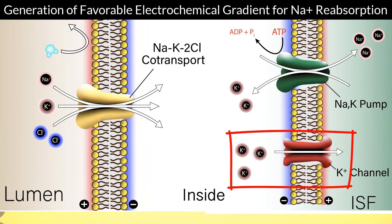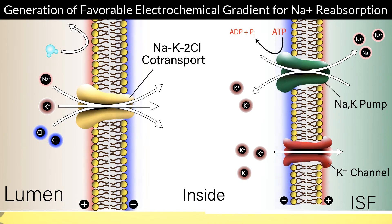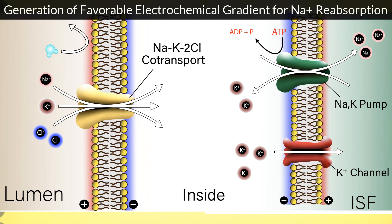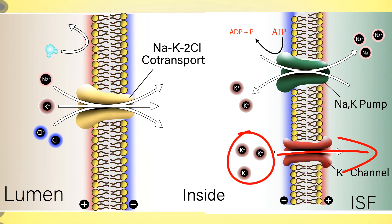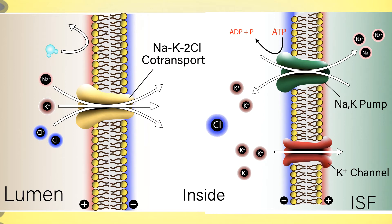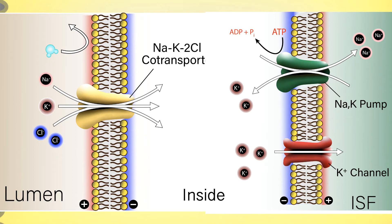The potassium leak channels are responsible for the inside-negative membrane potential. Because sodium is positively charged, this makes the movement of sodium from the tubular lumen into the cell very favorable. Once these ions are brought into the cell, they leave through the basolateral membrane into the interstitial fluid: sodium via the sodium-potassium pump, potassium down its concentration gradient through leak channels, and chloride via ion channels or basolateral transporters. Importantly, these epithelial cells lack aquaporin, so water movement is hindered at the thick ascending limb.